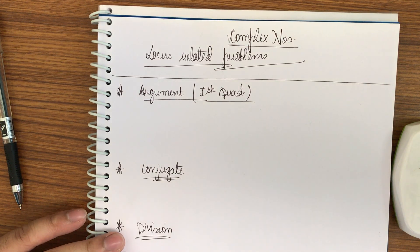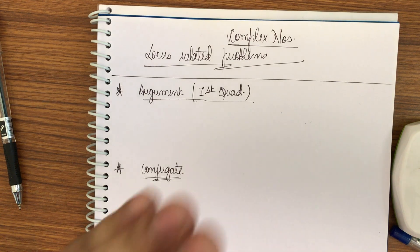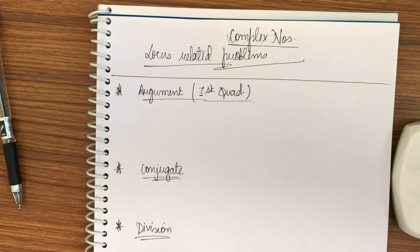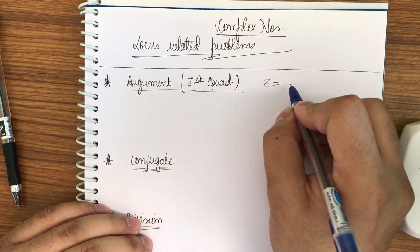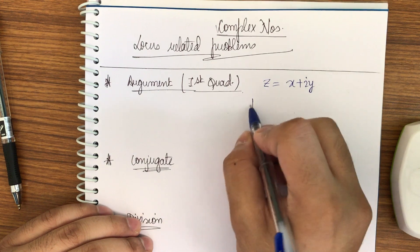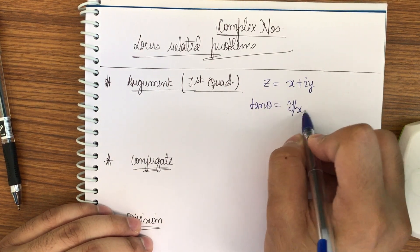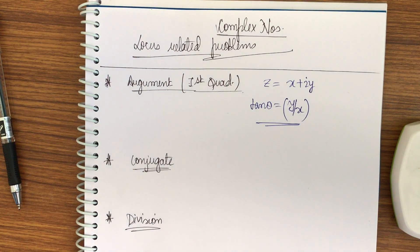Hello friends, in this video I shall be taking the complex numbers locus-related problems. I request you to watch the whole video as many concepts will be covered here and this video is useful for many questions in complex numbers. My main focus will be on locus-related problems. Before that, I would like to tell you what the argument of z is. If nothing is mentioned and I have a complex number z = x + iy, then its argument is taken as tan θ = y/x. I am only taking the first quadrant because nothing is mentioned, so the first quadrant is taken as the default.